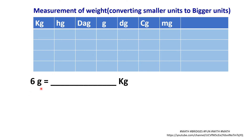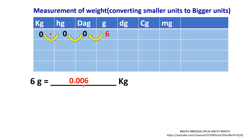Convert 6 grams into kilograms. Grams is a smaller unit and kilogram is a bigger unit. Write the mnemonic: kg, hg, dag, gram, dg, cg, mg. Write 6 at the gram position and mark kg as the ending point, filling in zeros in between. Count the jumps from gram to kg — that is 3 jumps, so we divide by 10 three times. Move the decimal point 3 digits from the left of the starting number. Therefore, 6 grams equals 0.006 kg.